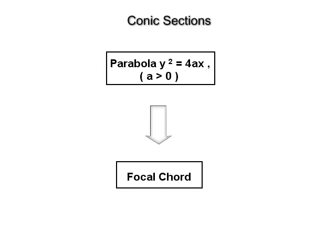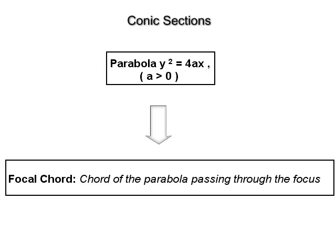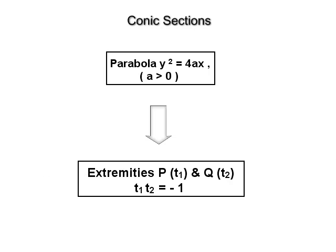Focal chord: A chord of the parabola which passes through its focus is called a focal chord of the parabola. If P and Q are the extremities of a focal chord of the parabola y² = 4ax with parameters t₁ and t₂, then t₁·t₂ = −1. That is, if t₁ is the parameter of one end of a focal chord, then the parameter of the other end is −1/t₁.